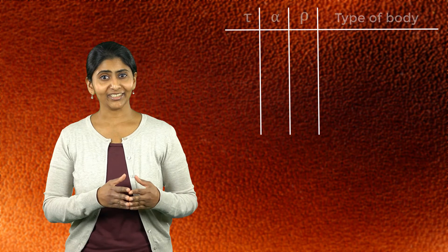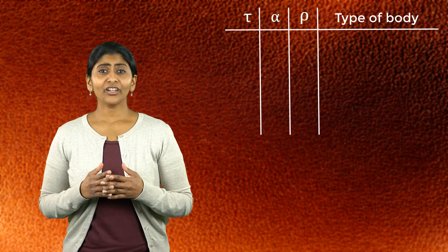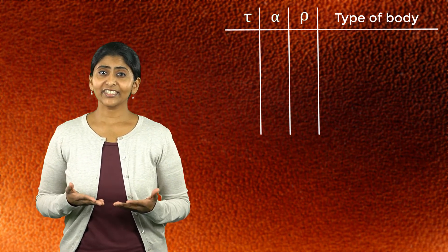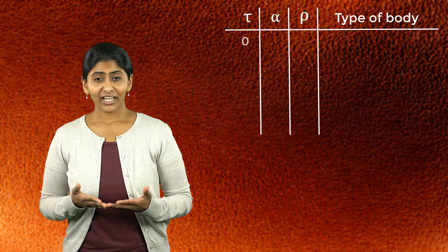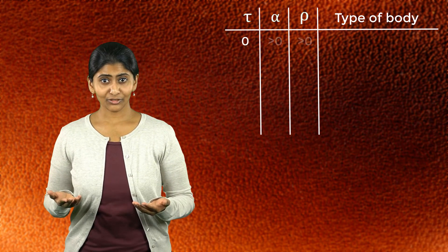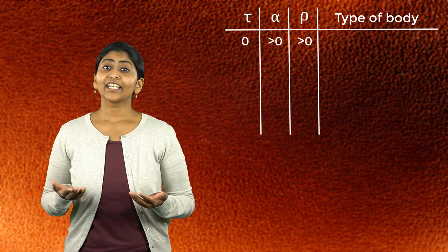Based on these three components, the behavior of a body or a material can be characterized. If a body does not transmit any incident radiation, that is if the transmissivity is equal to 0 and the absorptivity and reflectivity are non-zero, then the body is said to be opaque.